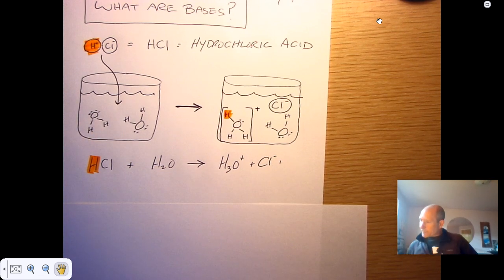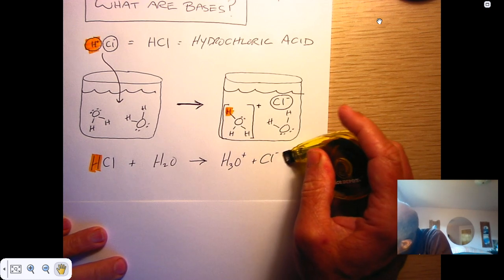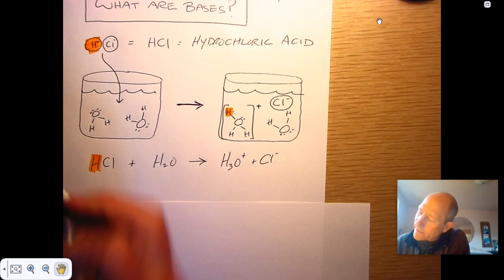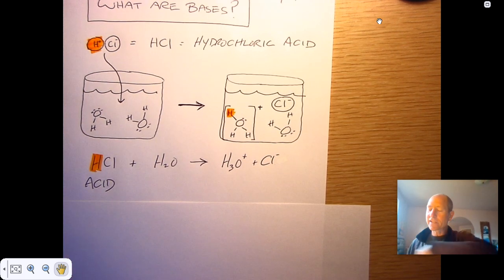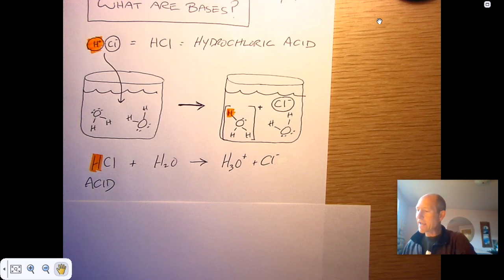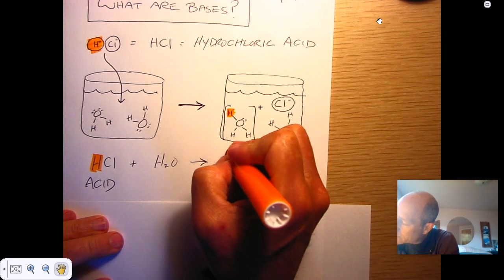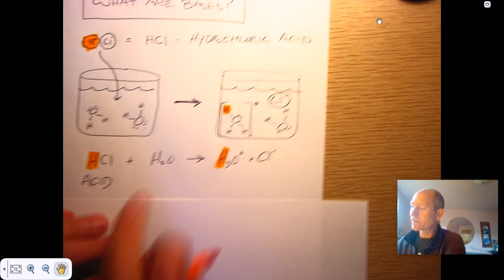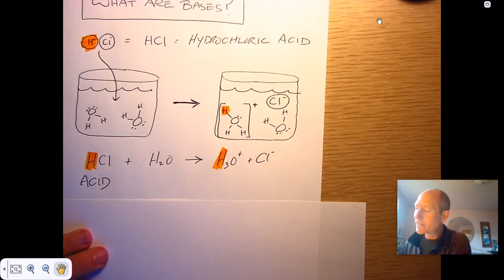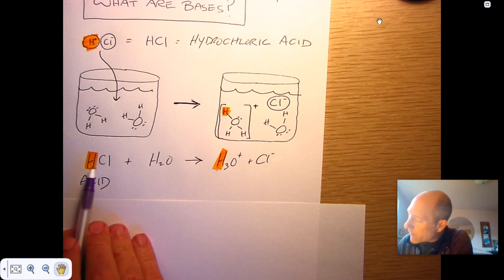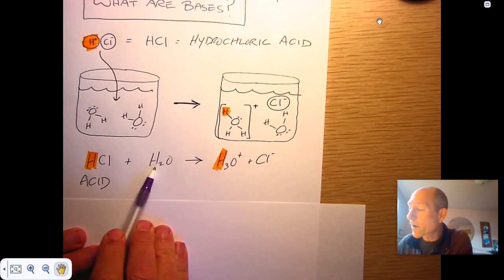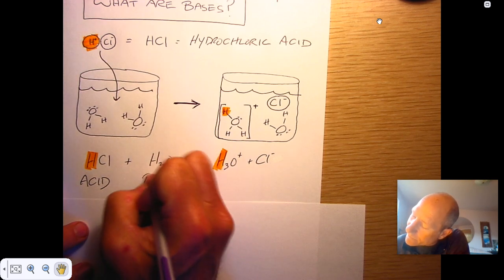This molecule right here behaved like an acid. And the reason it behaved like an acid is because it donated a proton or a hydrogen ion to this water right here. So, that was the acid. And here's the cool part. The hydrochloric acid behaved like an acid because it donated this proton. But who did it donate it to? It donated it to this water molecule. So, this water molecule behaved like a base.